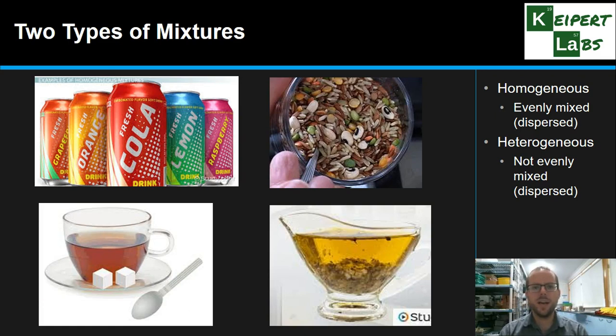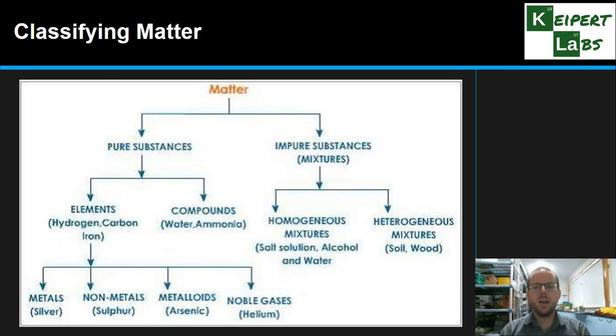Now, one thing to be aware of is that we can't see the particles to look, but we can still group it in one of these ways. So then, if we have matter, how do we decide? We can look at a diagram like this that you can copy down to give us an idea. We start off with something that's matter. Does it have only one type of particle, or is it more than one type of particle?